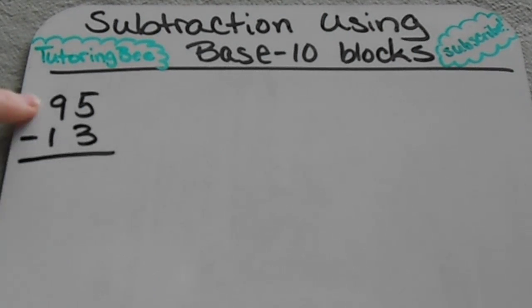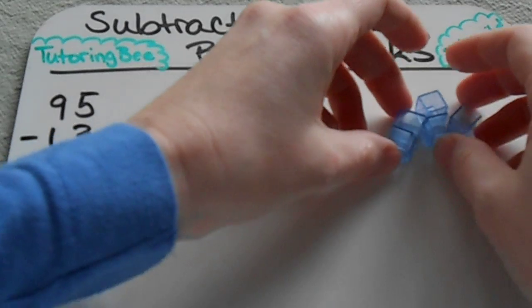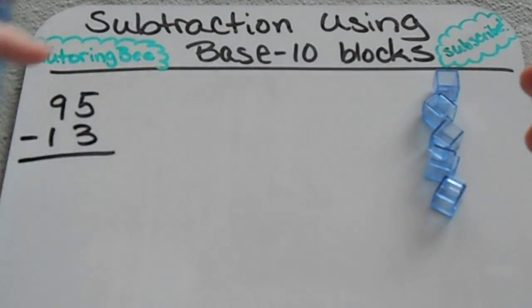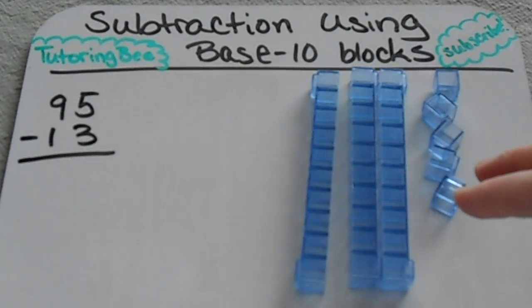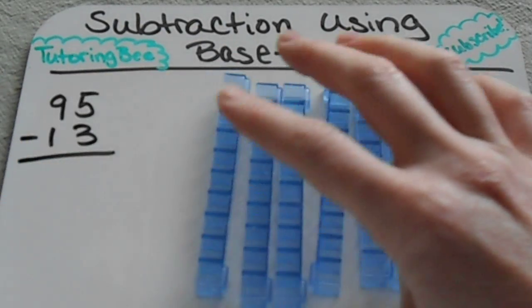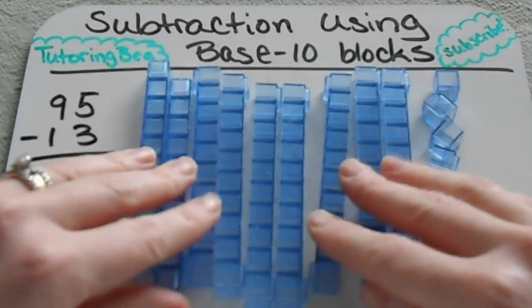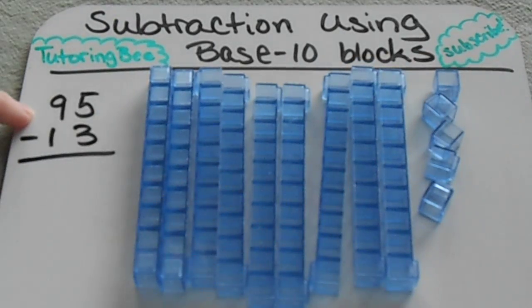So I have a pretty basic subtraction problem here, 95 minus 13. So I'm just going to set up that top number, 95, and I do that by putting in five ones and then nine tens. So I've got my first number set up.